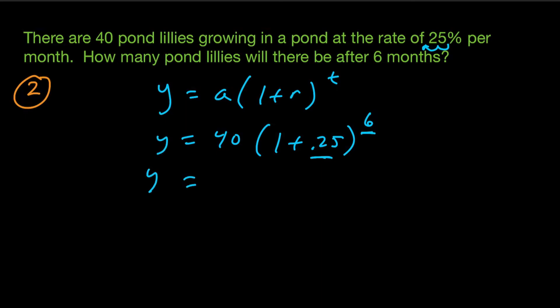So if we simplify this a little bit further, we get 40. Our base is 1.25. That represents the growth factor, like what you're multiplying by each month. And you're doing that six times. And we're going to see how many total pond lilies there are after six months.